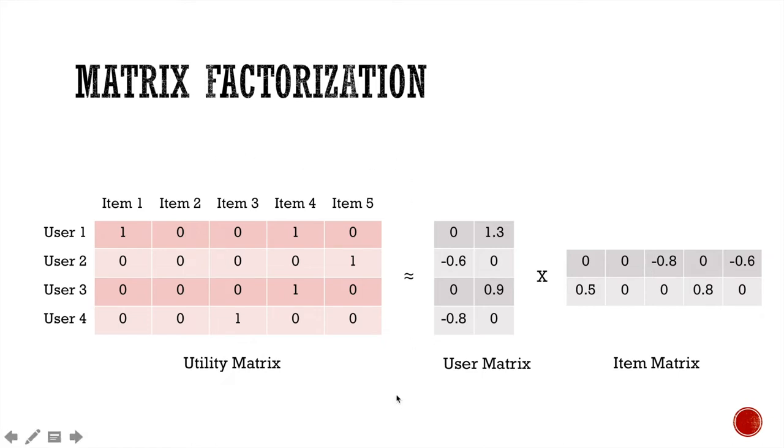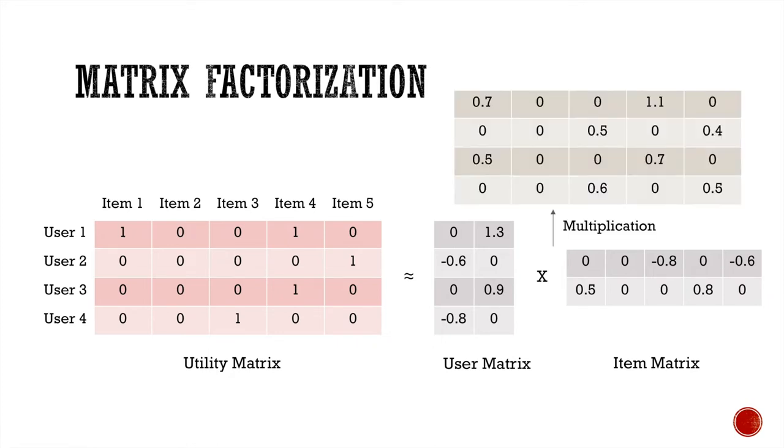We decompose this user and item matrix, aka utility matrix, into two sub-matrices, the user matrix and the item matrix. For prediction, we simply multiply these two sub-matrices to reconstruct the utility matrix. And the larger the value on these unobserved entries, the more likely that the corresponding user is going to interact with the corresponding item.